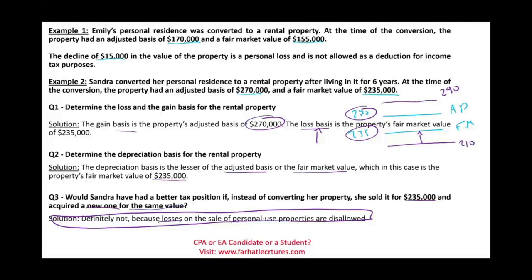To summarize: if you dispose of personal use property at a loss, the loss is disallowed. If you have a gain, it is taxable — either as capital gain if held more than one year, or as ordinary income if held less than one year. Go to Farhat Lectures, review the multiple choice and true-false questions. Good luck, study hard, and stay safe.